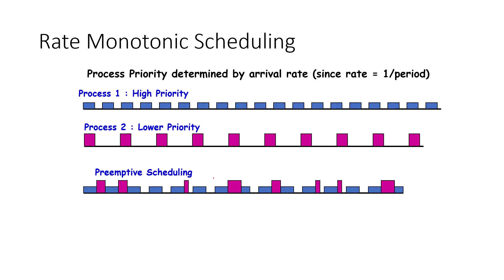In rate monotonic scheduling, the priority is 1 over the period. For a high priority process, the priority is high because the period is low. For a lower priority process, the period is higher. Similar to EDF, we have preemptive scheduling, which means that tasks can preempt each other.